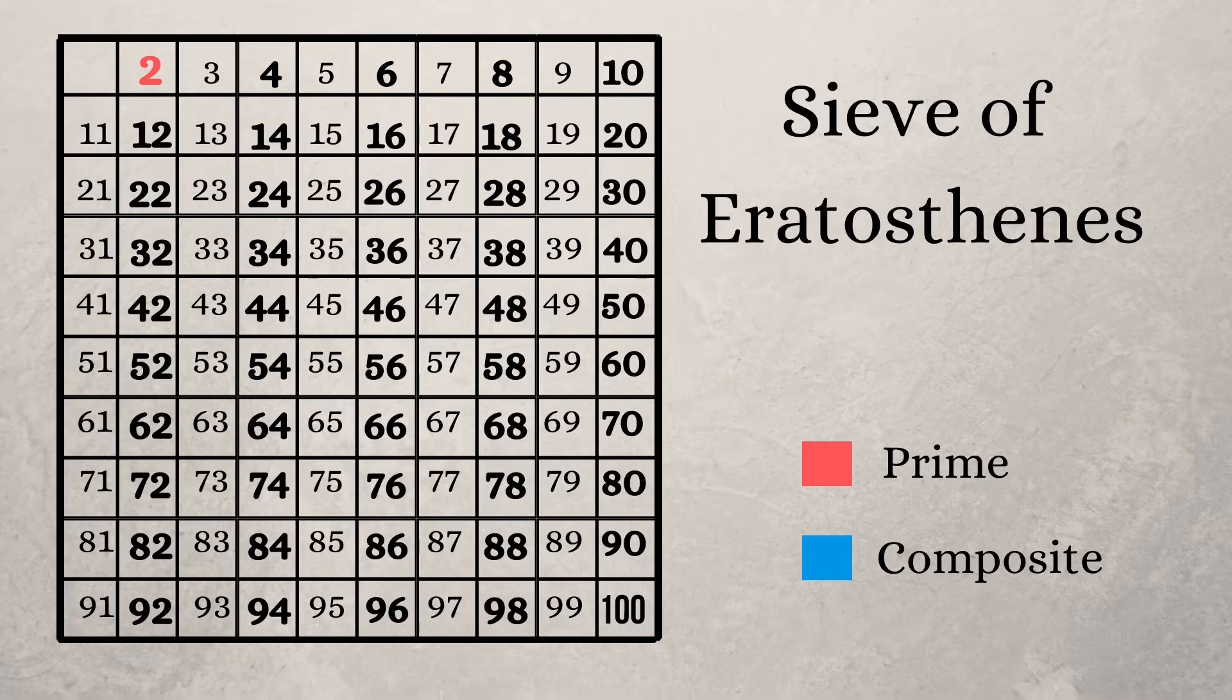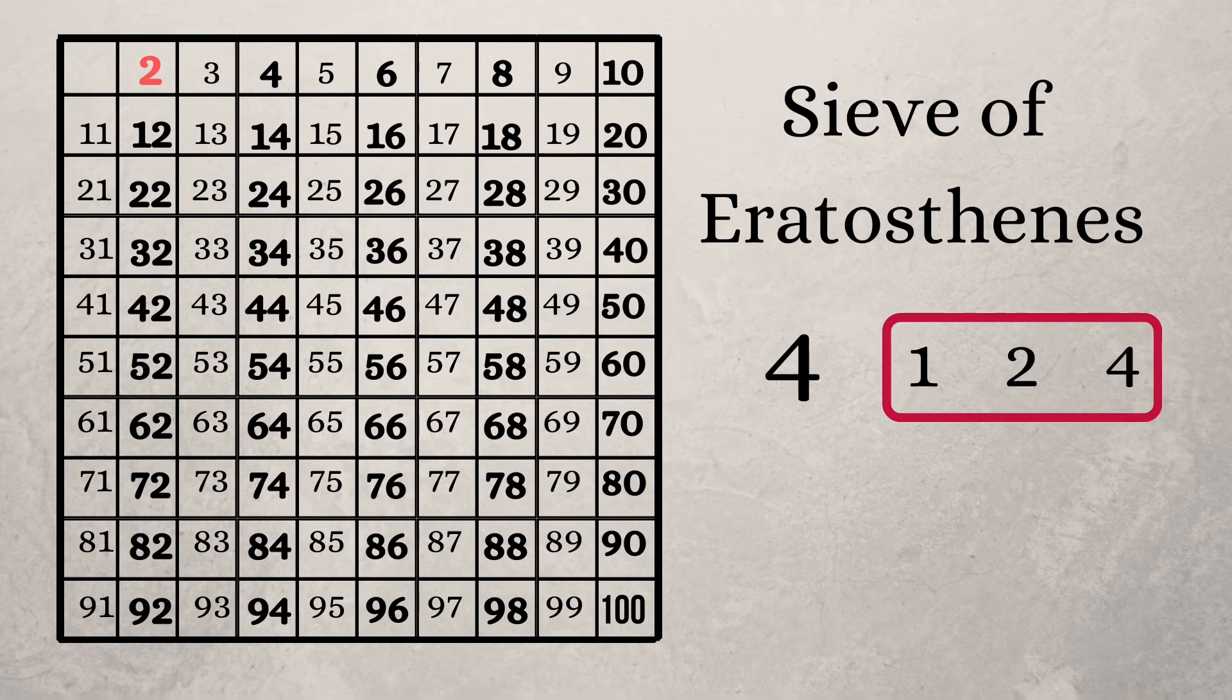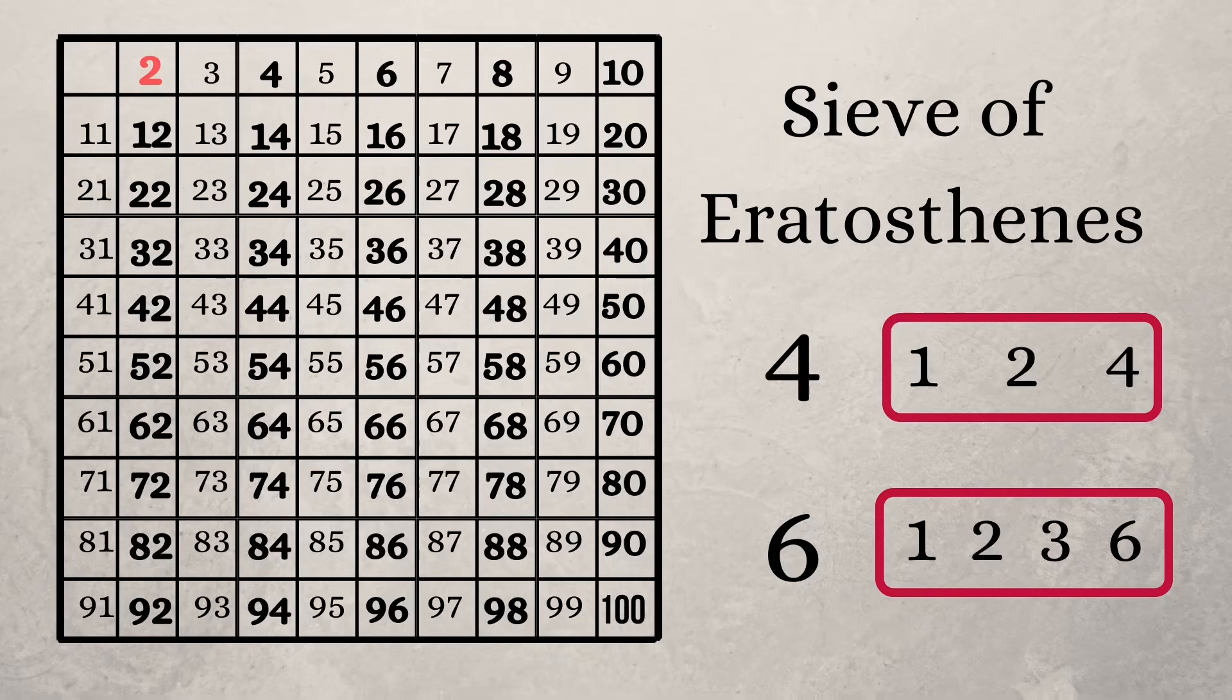Since all these numbers are multiples of two, they have two as one of their extra factors. So they clearly have more than two factors. For instance, factors of four are one, two, and four. Factors of six are one, two, three, and six.